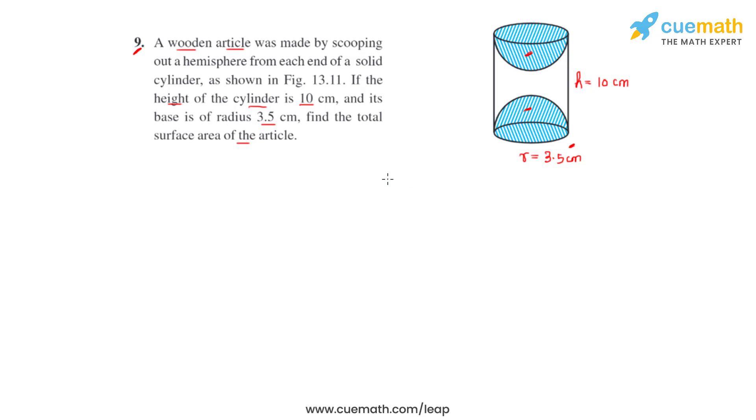From the figure, it's clear that the radius of the hemisphere scooped out is the same as the radius of the base cylinder, since both the hemispheres are of equal radius. So we can write that the radius of the hemispheres shaded in blue and the cylinder will be equal.